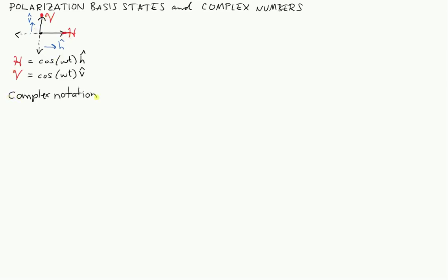If we want to write the H state in complex notation, it's straightforward. An electric field with amplitude E-naught in the horizontal state can be written as the real part of E-naught times e to the minus i omega-t, times h-hat. The only non-real part is e to the minus i omega-t, and its real part is cosine of minus omega-t, which equals cosine of plus omega-t because cosine is an even function. The same applies for the V state.